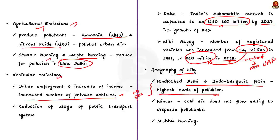The geography of a city also plays an important role. Delhi and the Indo-Gangetic Plain have the highest levels of air pollution, primarily due to lack of dispersal by sea breeze unlike coastal cities like Chennai, Mumbai or Visakhapatnam. The problem is amplified during winters when cold air does not flow easily to disperse pollutants. The agricultural crop residues burnt during this period in Punjab, Haryana and Western UP also deteriorate the pollution situation in cities like Delhi.